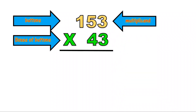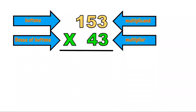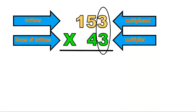153 is the multiplicand while 43 is the multiplier. To multiply 3 digits by 2 digits, we need to multiply first at the ones place, going from right to left.